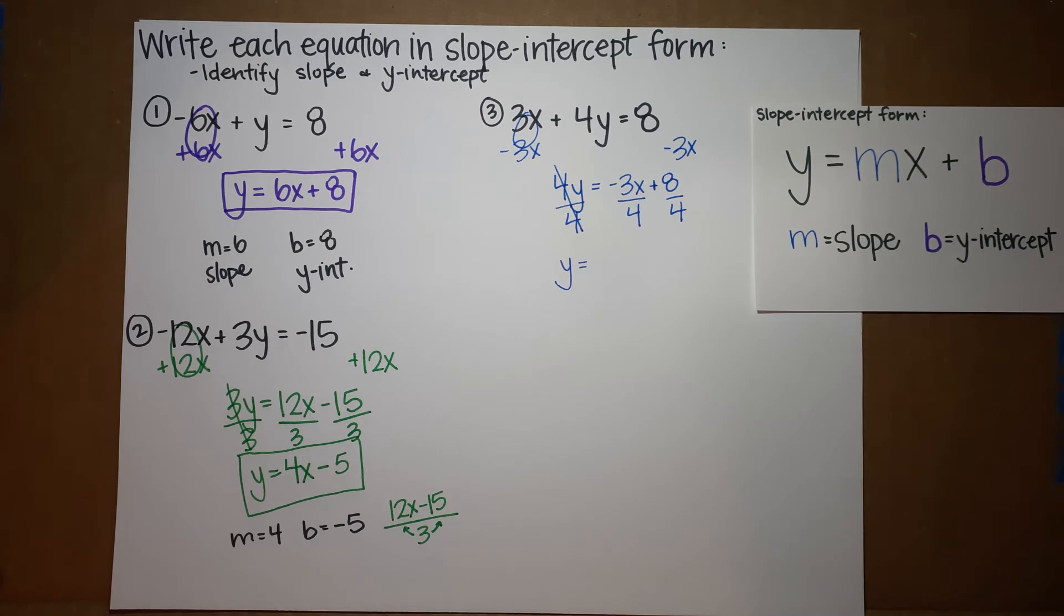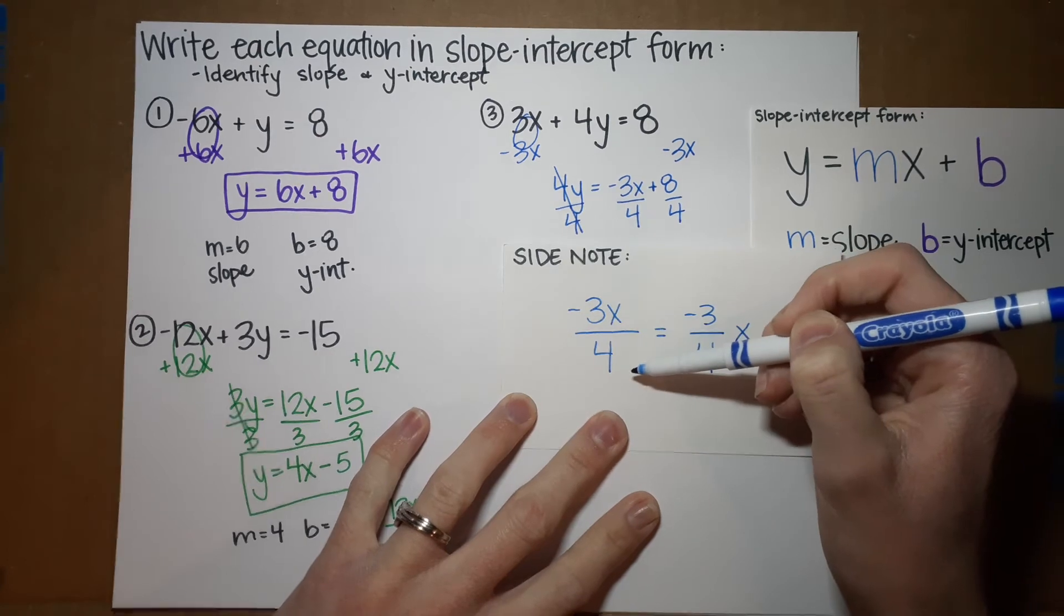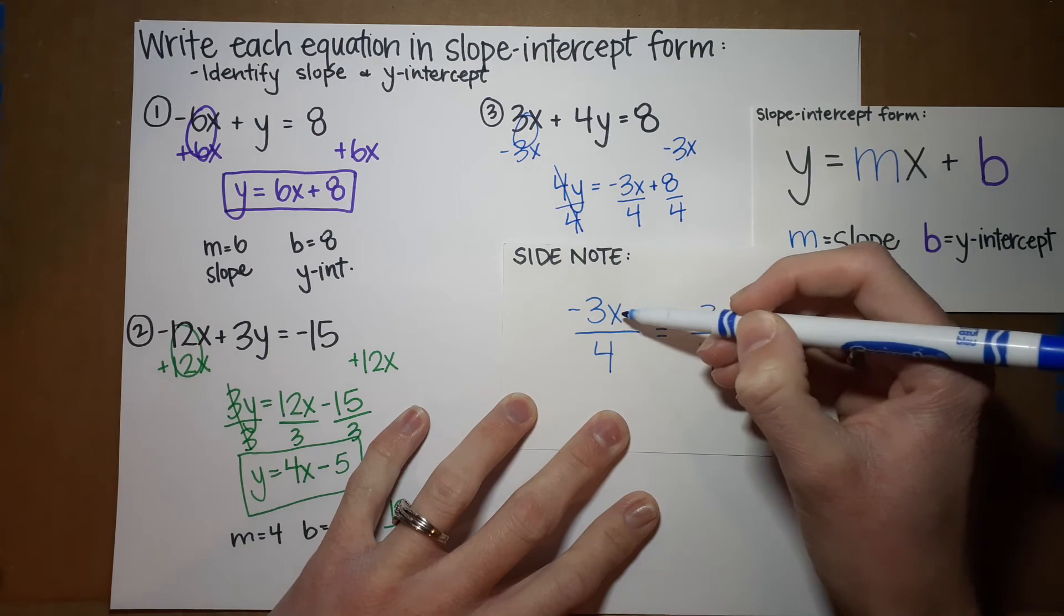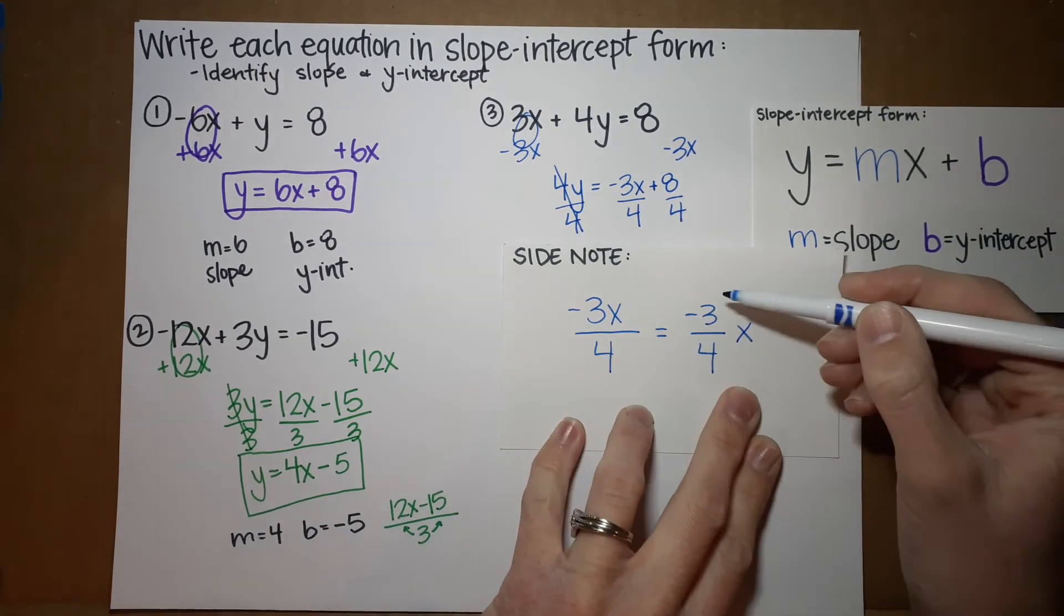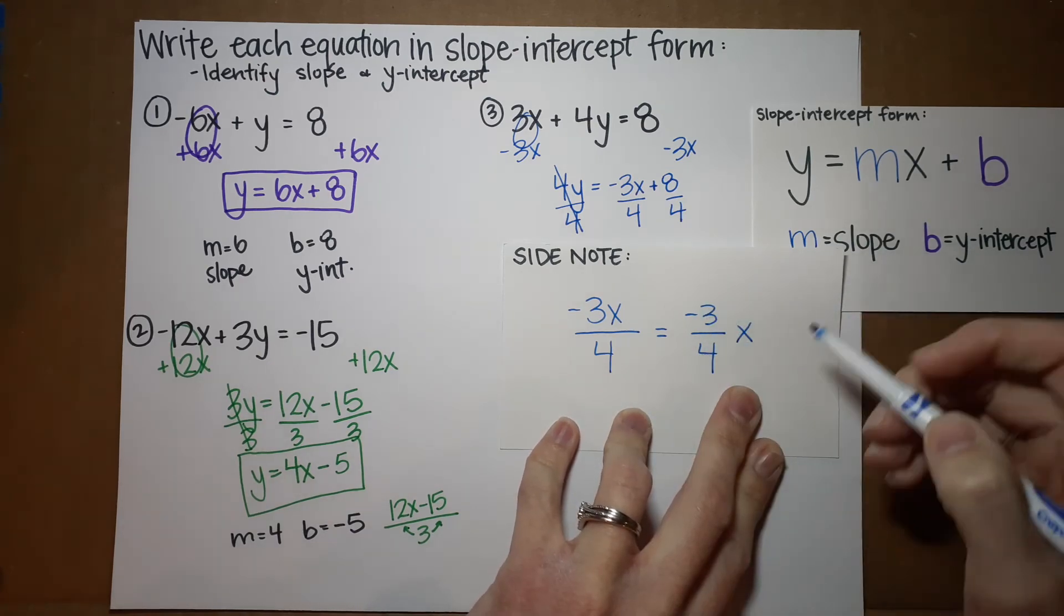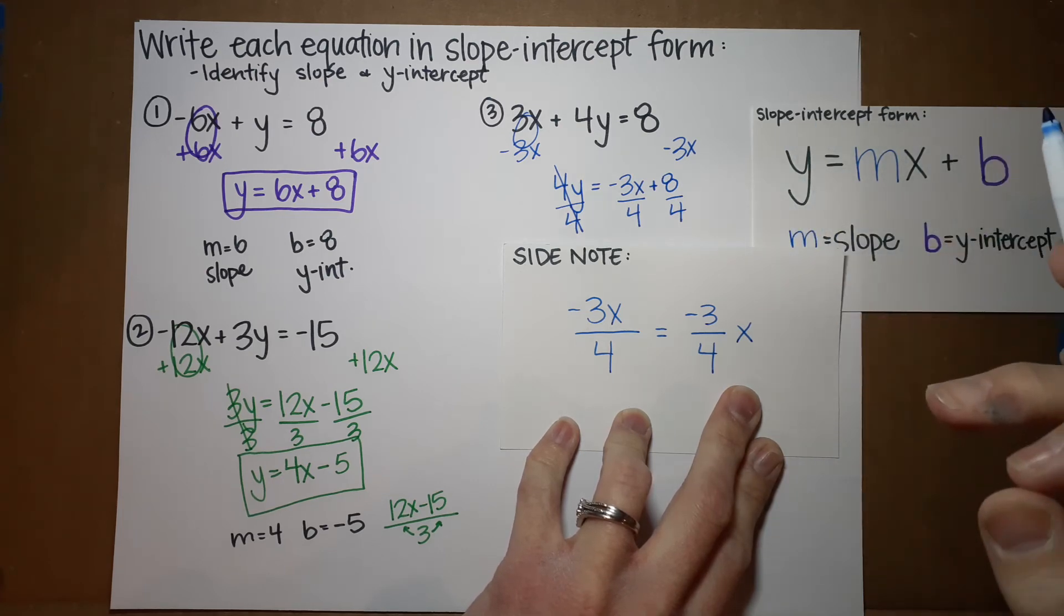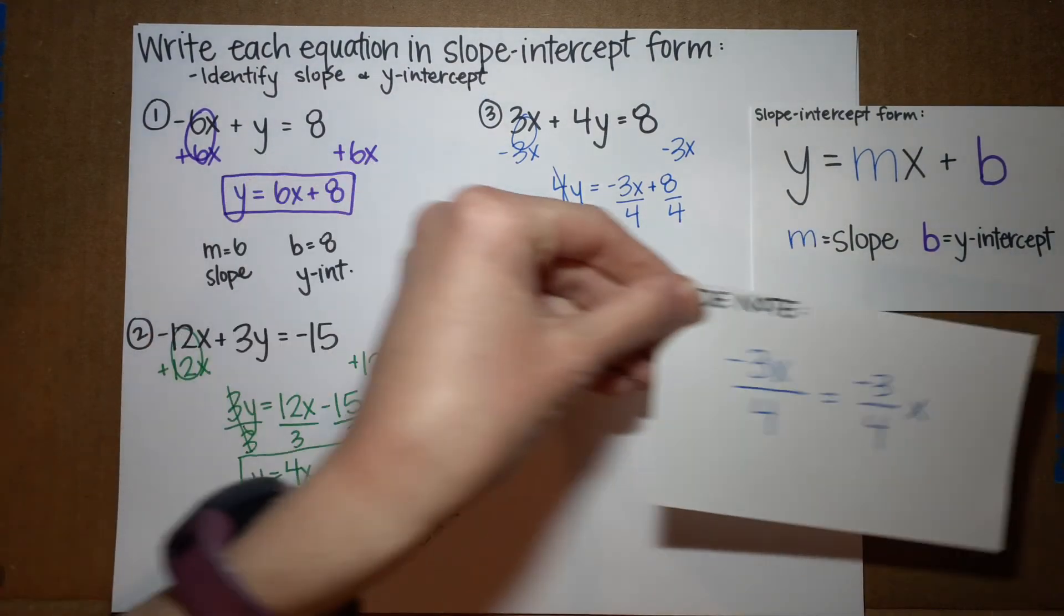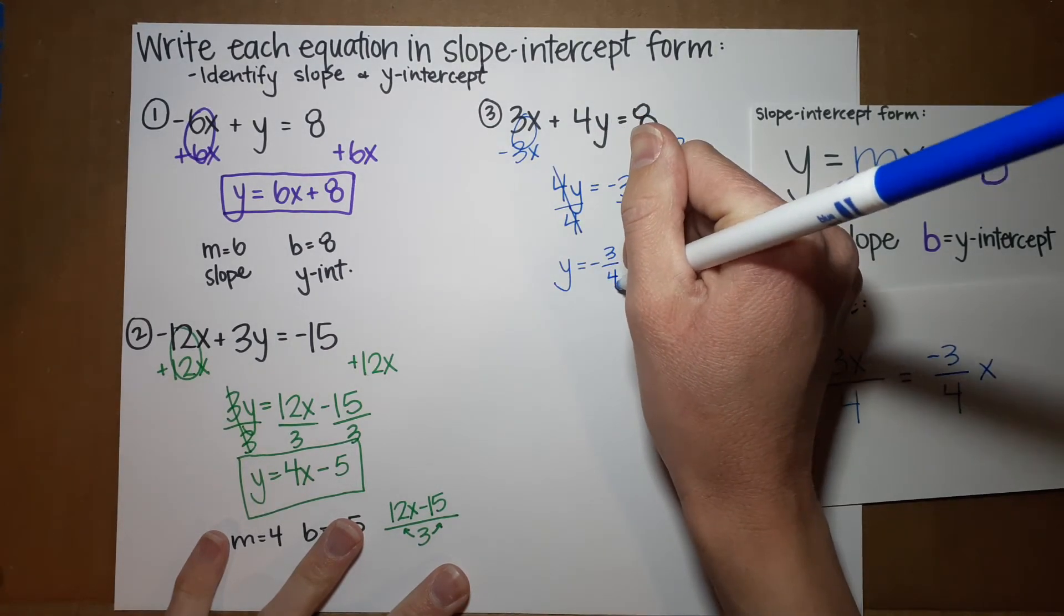So, here's a quick side note. We've got negative 3x divided by 4, right? That looks a little scary, but the cool thing is I can just pull this x off to the side. So, then it's negative 3 fourths x. It's a little less scary that way. Also, that's the way we want it for our slope intercept form. We want them written separate like that. So, I'm just going to write this as negative 3 fourths x.